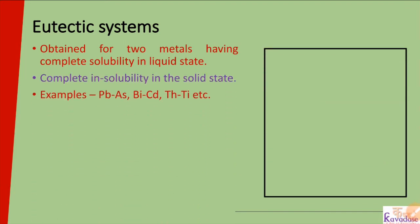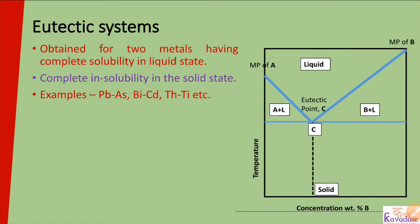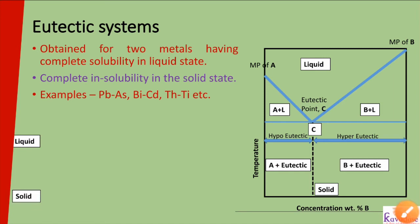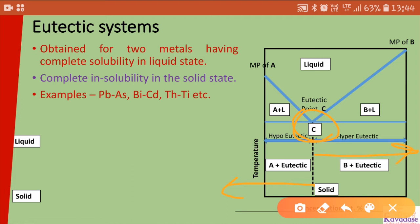This is the isomorphous type of system, showing the liquidus line — above which liquid metal is present — and the solidus line — below which solid metal is present — with liquid plus solid in between. The melting points of metal A and metal B are also shown. The next is the eutectic type of system, where there is complete insolubility in solid state but complete solubility in liquid state.